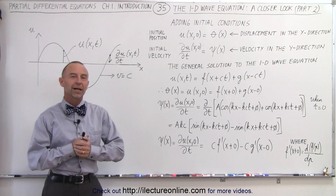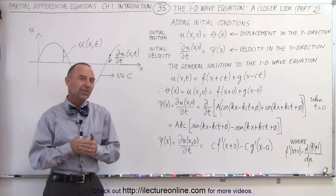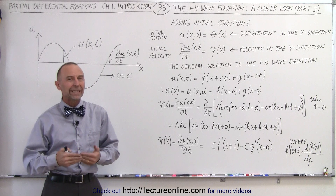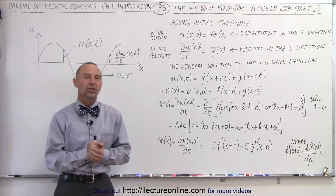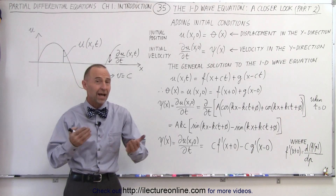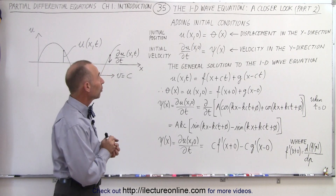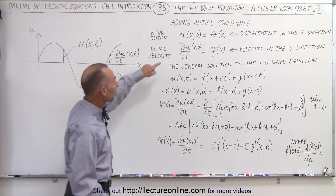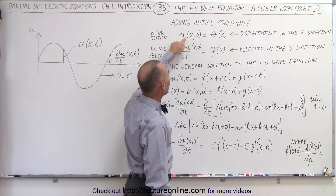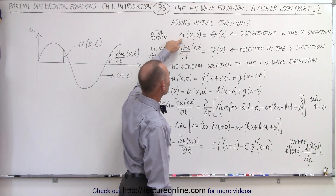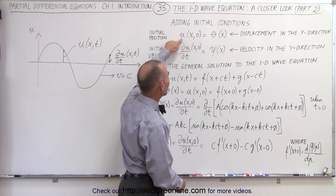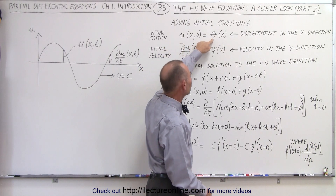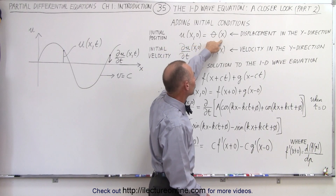Welcome to our lecture online. Now let's take a look at the 1D wave equation with initial conditions when time equals zero. When we add initial conditions, we replace t with zero, and the solution to our wave equation u simply becomes a function of position only.